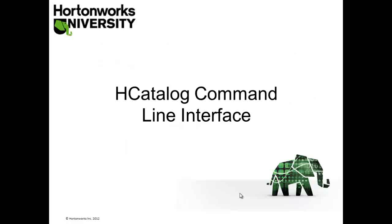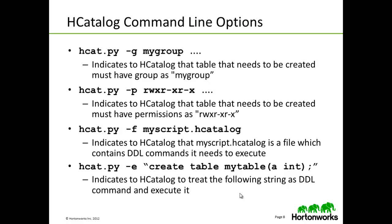The H-Catalog command line interface has several useful options. For example, the first option indicates to H-Catalog that a table that needs to be created must have a group as MyGroup. The second option indicates that the table must have permissions as read, write, execute, read, execute, and read and execute. The third option indicates to H-Catalog that MyScript.HCatalog is a file containing DDL commands it needs to execute. The fourth option indicates to H-Catalog to treat the following string as a DDL command and execute it.